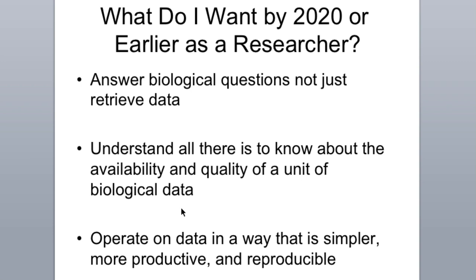Just to finish off, what I want is to be able to answer questions. Right now I can retrieve data, but I can't go to resources and answer questions quite in the way I want. I want to know all there is to know about a unit of biological data — I can't even find it now. I can find instances of it, but I can't find all of the instances. I want to do things that are simpler, more productive and reproducible. I need to have a registry. We don't actually have a registry for data — what we have is a Google index.